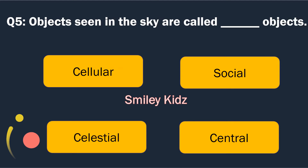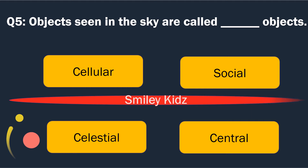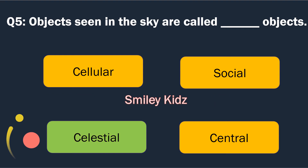Question number 5. Objects seen in the sky are called blank Objects. Options are: Cellular, Social, Celestial and Central. The right answer is Celestial. Objects seen in the sky are called Celestial Objects.